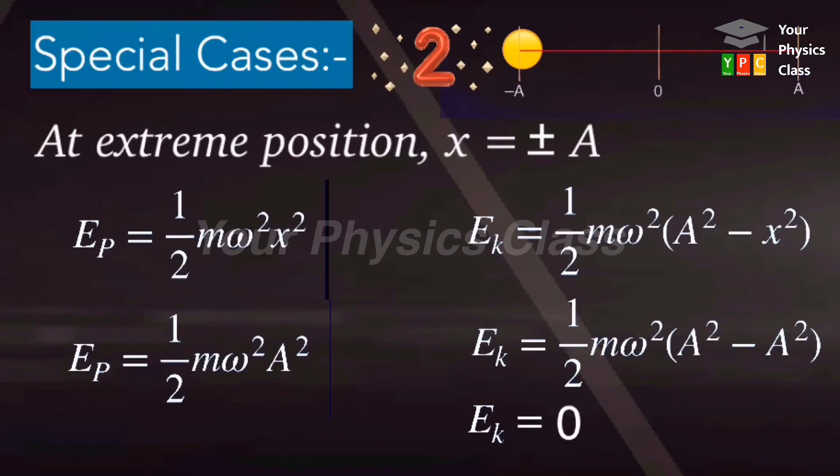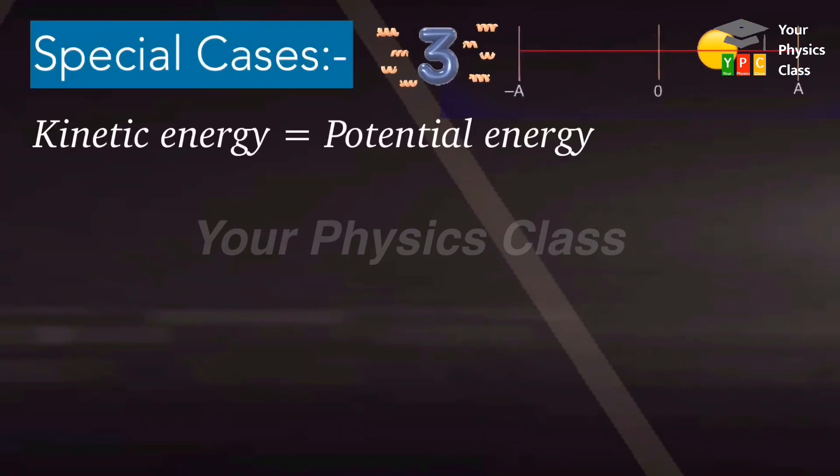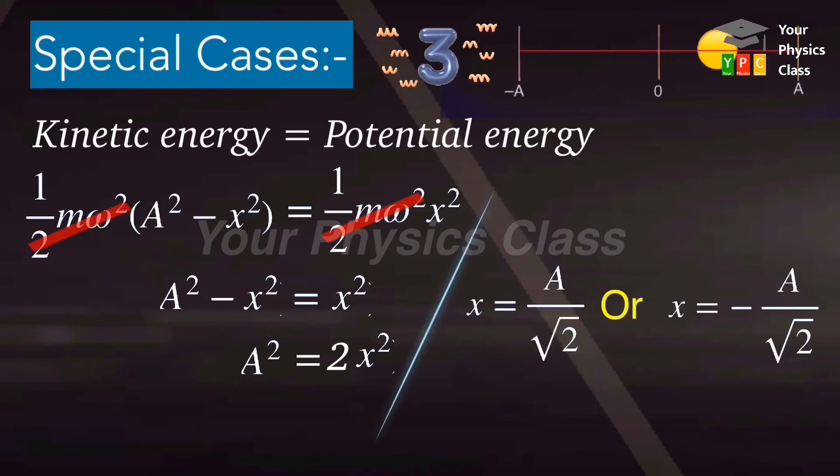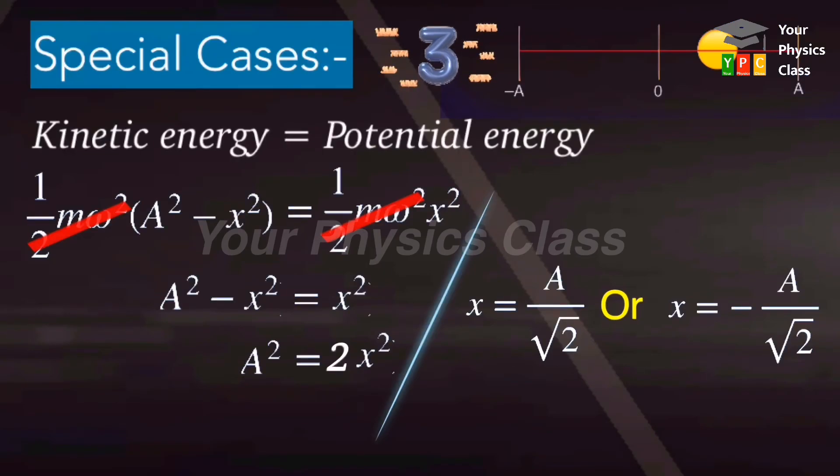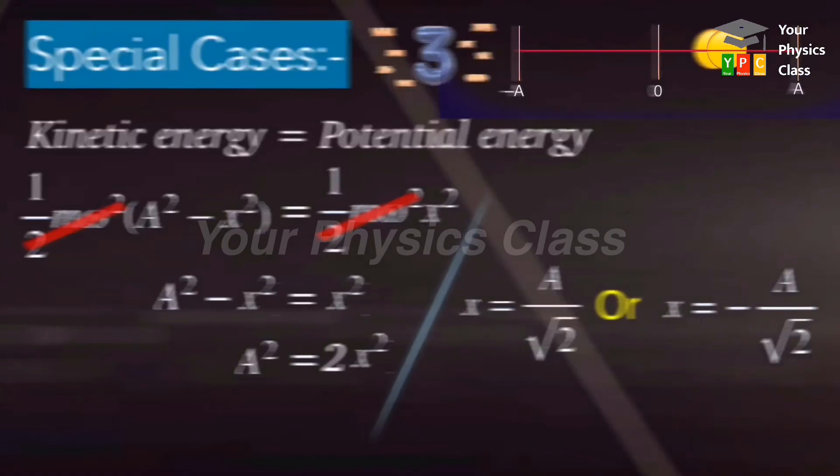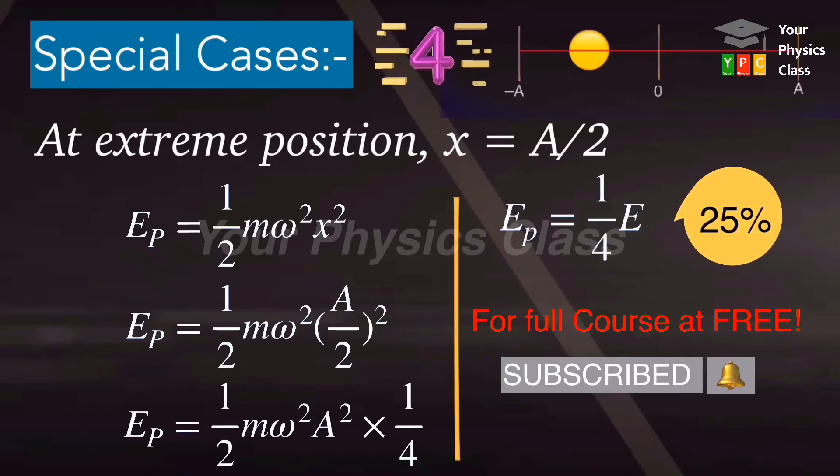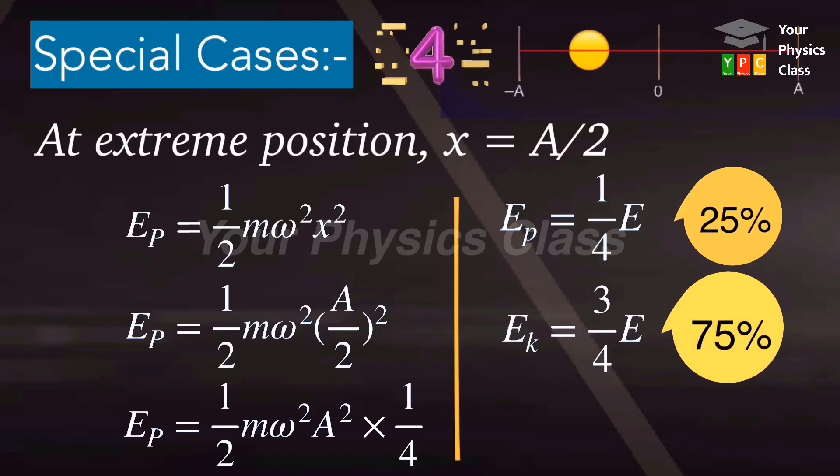At some point x, kinetic energy would be equal to potential energy. To find this point, let us equate kinetic and potential energy. On cancelling like terms from both sides and simplifying the given equation we get x equal to plus minus a by root 2. At this point, 50 percent of total energy is kinetic while remaining 50 percent potential. When x equal to a by 2, then potential energy will be one-fourth of total energy. It means that kinetic energy should be three-fourths of total energy.